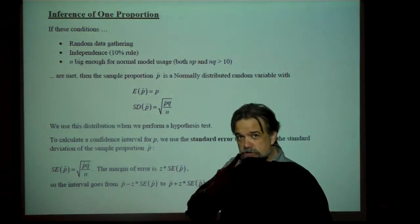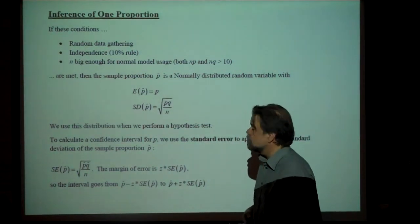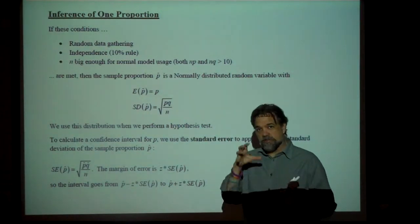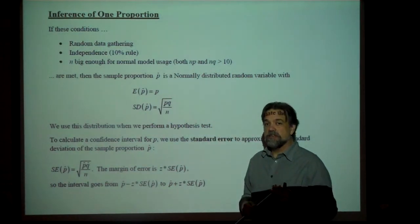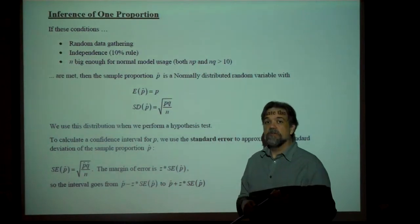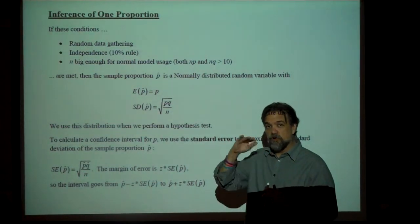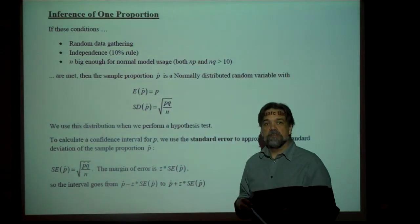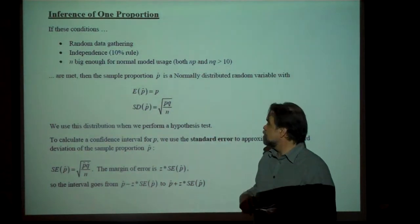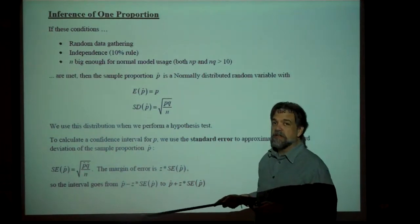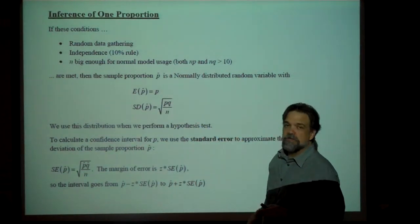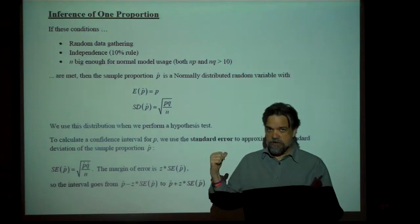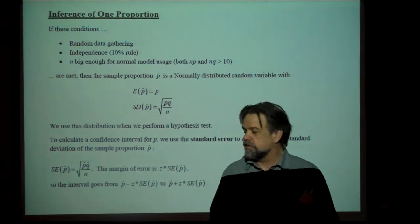So if those three conditions are met, then we have p-hat — our sample proportion — and p-hat is a random variable with a normal distribution. The expected value of p-hat is p, p being the population proportion. And the standard deviation of p-hat is the square root of pq over n. Now, this is all review — I'm just refreshing your memory.